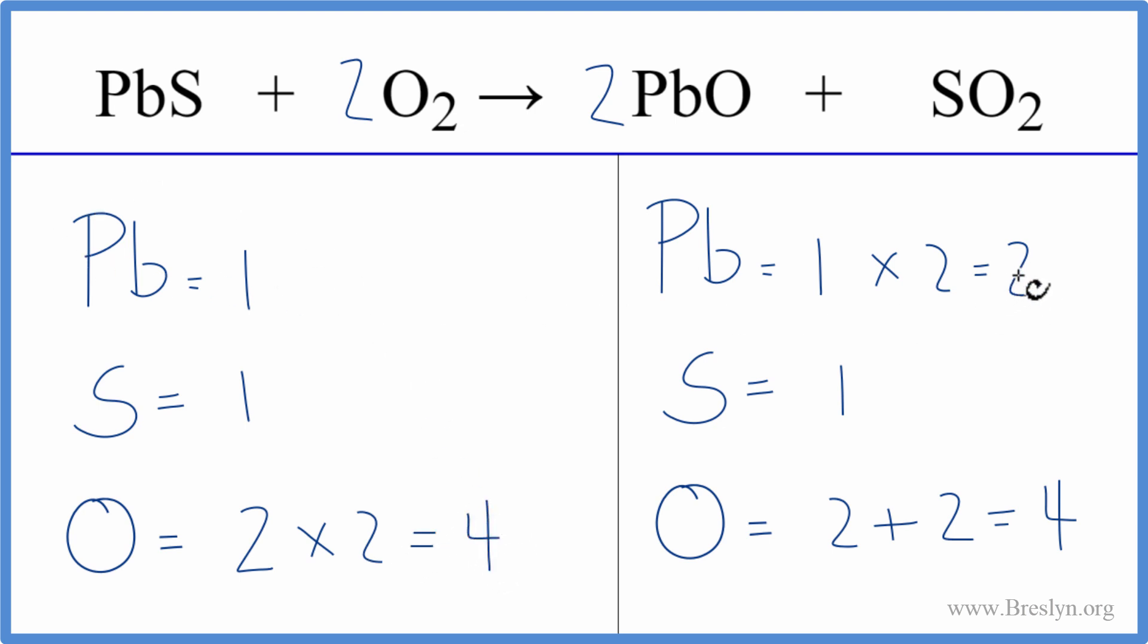We have two here and one here, so we need to put a coefficient of two in front of the lead sulfide. Now we have one times two—that balances the lead atoms—and one times two for the sulfur. So now the sulfurs aren't balanced. Let's go over and put a two in front of the sulfur dioxide.